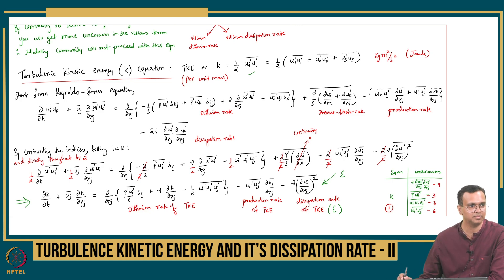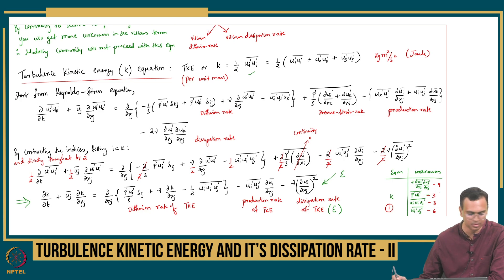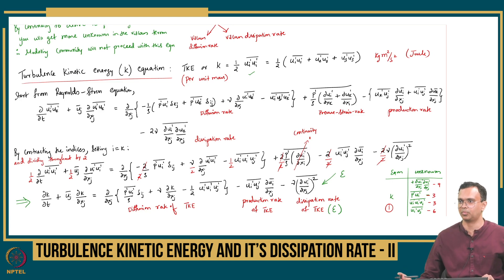Again, the turbulence closure problem. I found a way to make the Reynolds stress equation simpler by deriving an equation for turbulence kinetic energy, but it is still giving me more unknowns — one equation, many unknowns: 21 unknowns. Hence, there is a turbulence closure problem again.